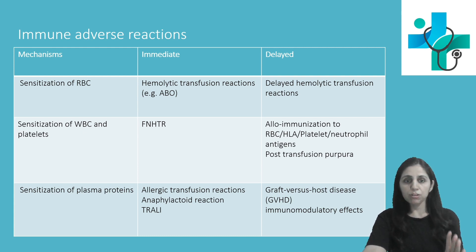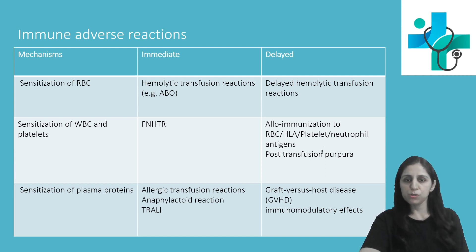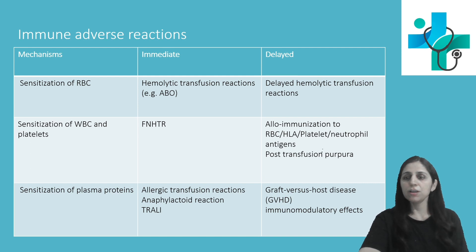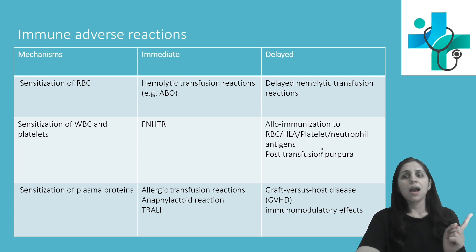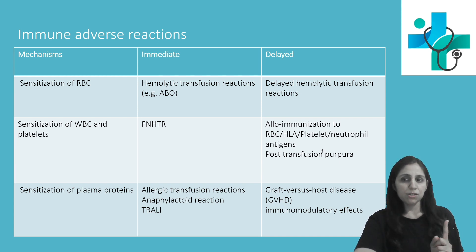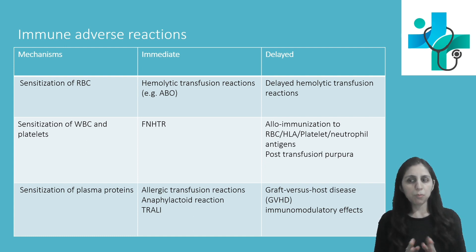The fourth and important one is TRALI — transfusion related acute lung injury — which usually occurs within 4 hours of blood transfusion. The patient presents with dyspnea and hypoxia, secondary to non-cardiogenic interstitial pulmonary edema, also known as ARDS. The main mechanism is either passive transfer of donor antibody against HLA or neutrophil antigens, which react with the recipient's WBC, leading to increased pulmonary microvascular permeability.